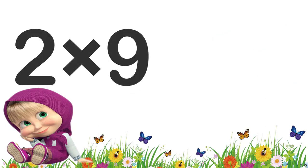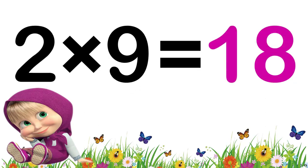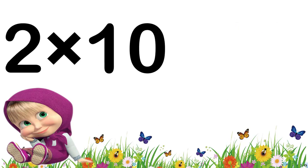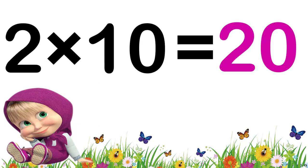Two nines are eighteen. Two tens are twenty.